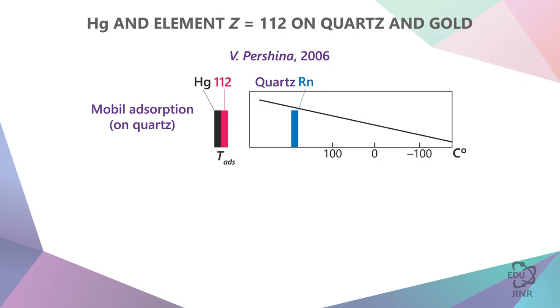If radon moved to the lowest temperature, and if mercury also moved to a low temperature because it does not react with quartz, then element 112 must stop between them.